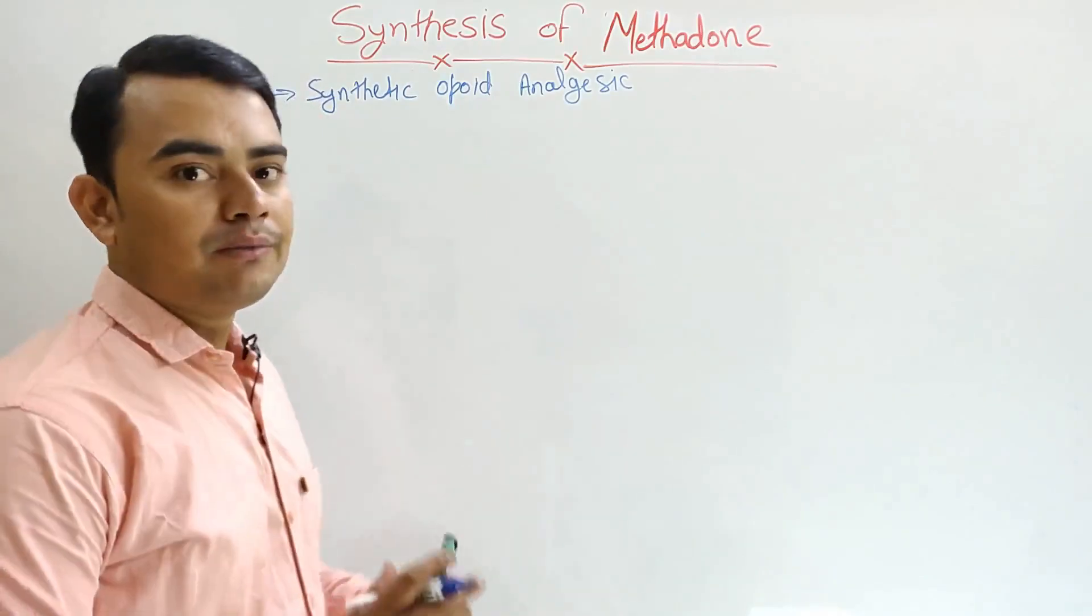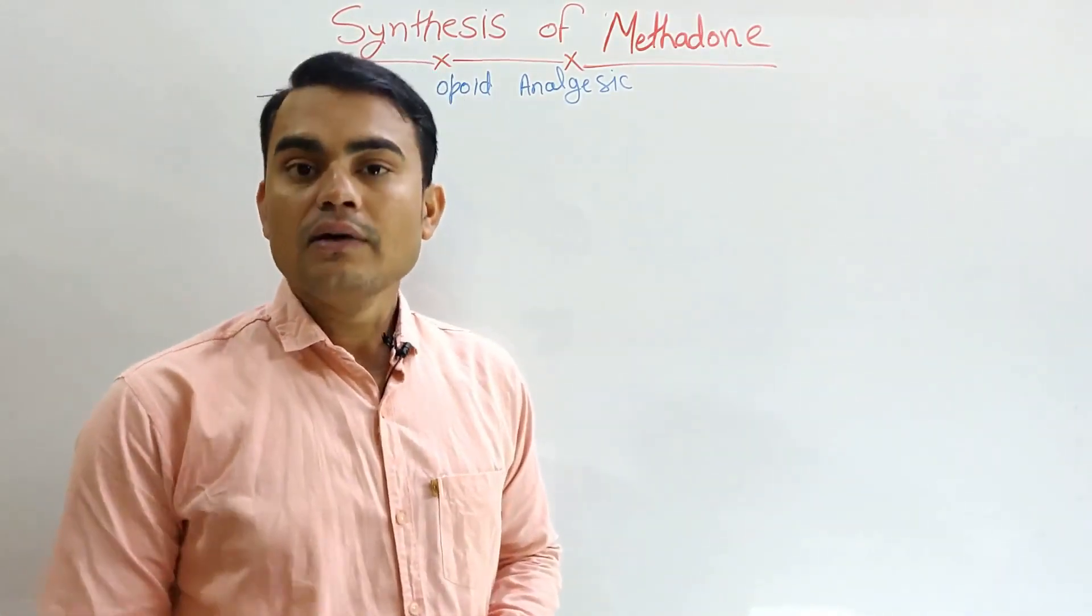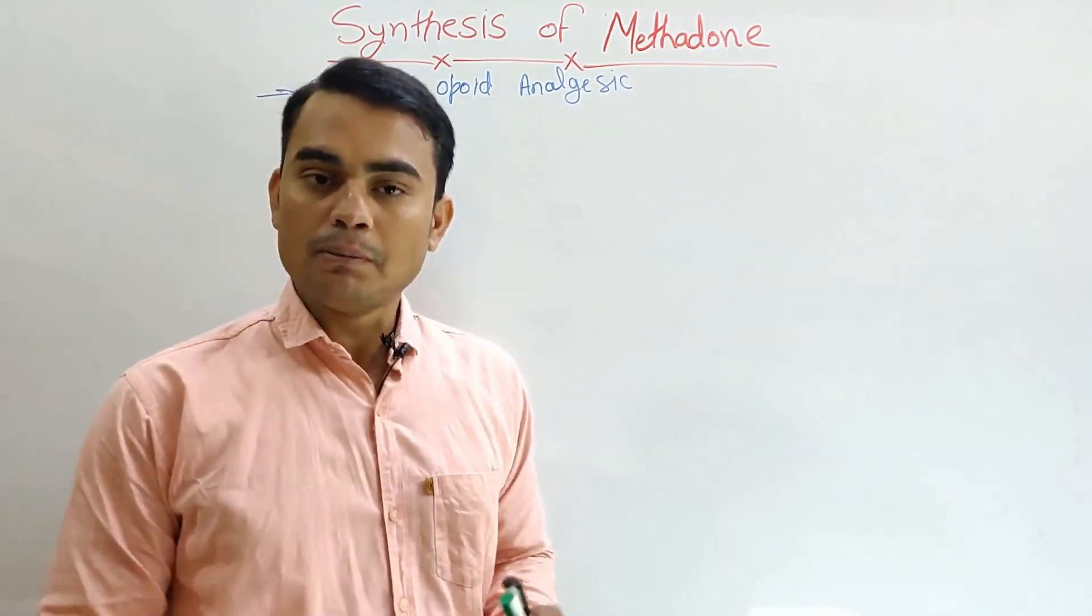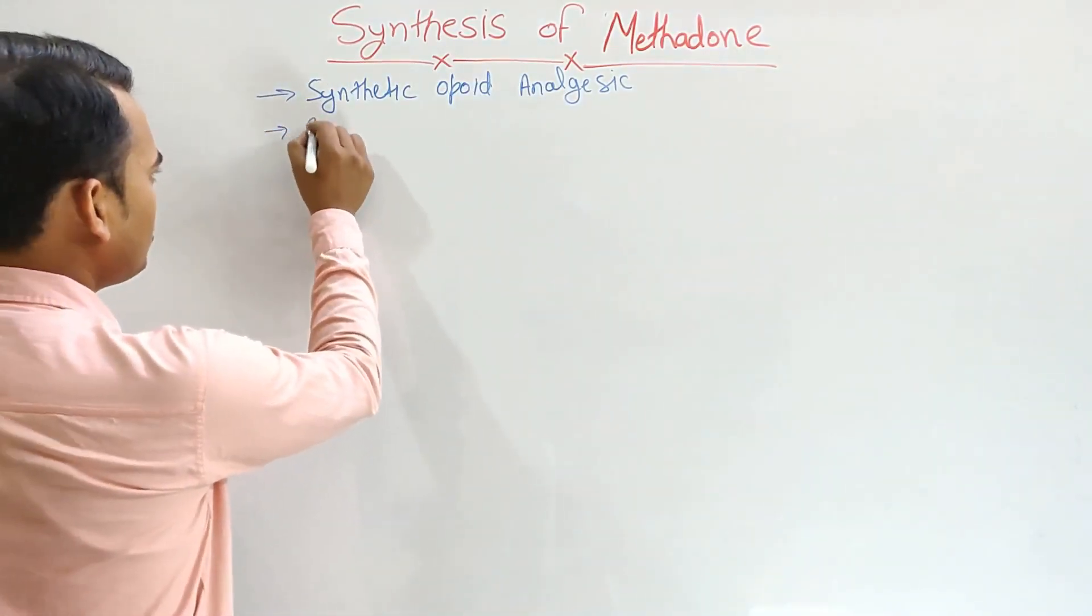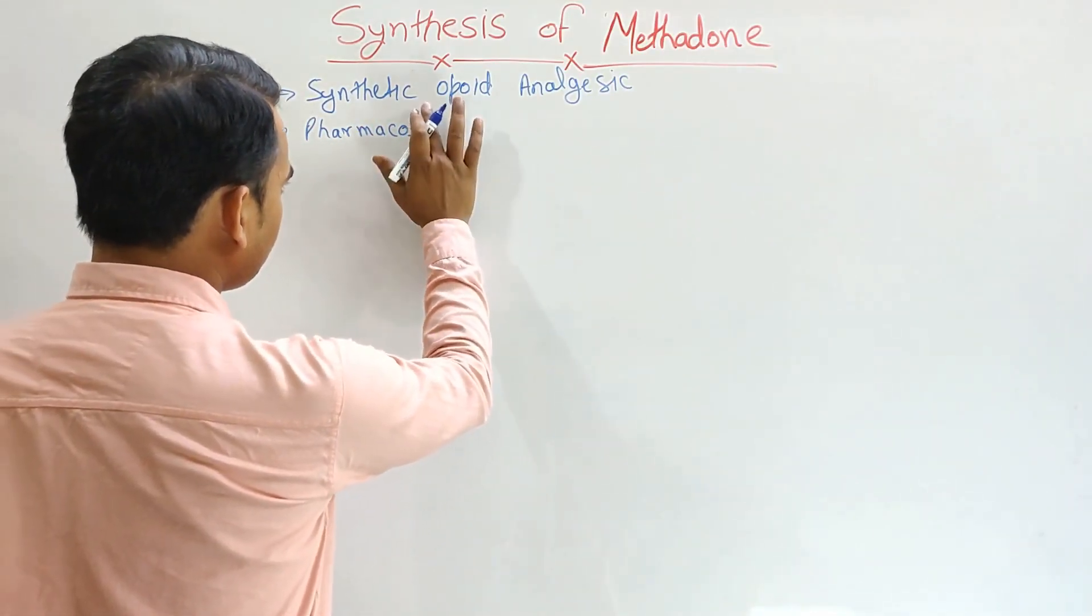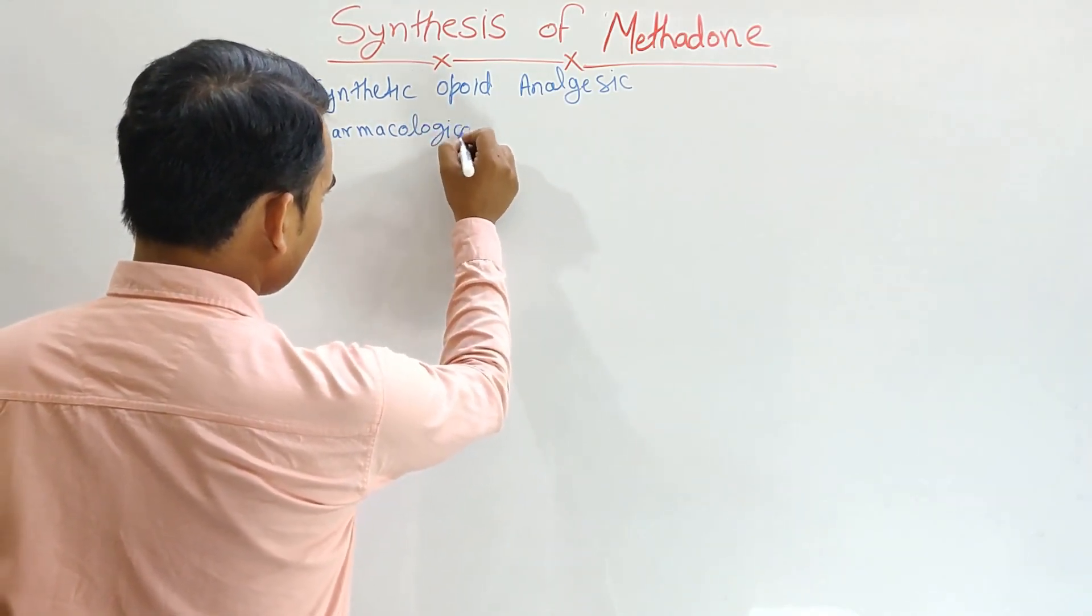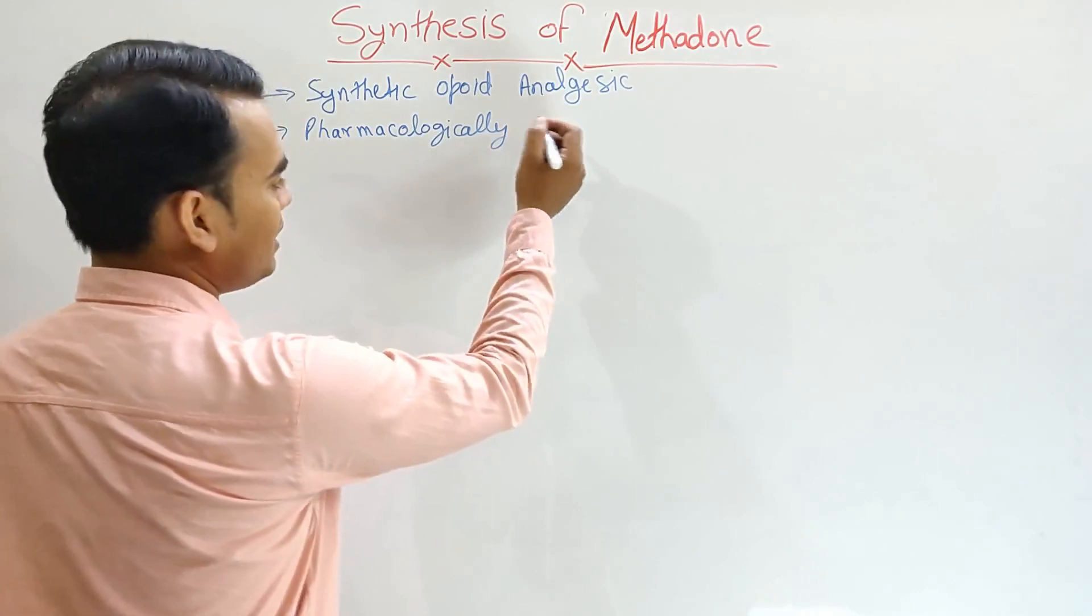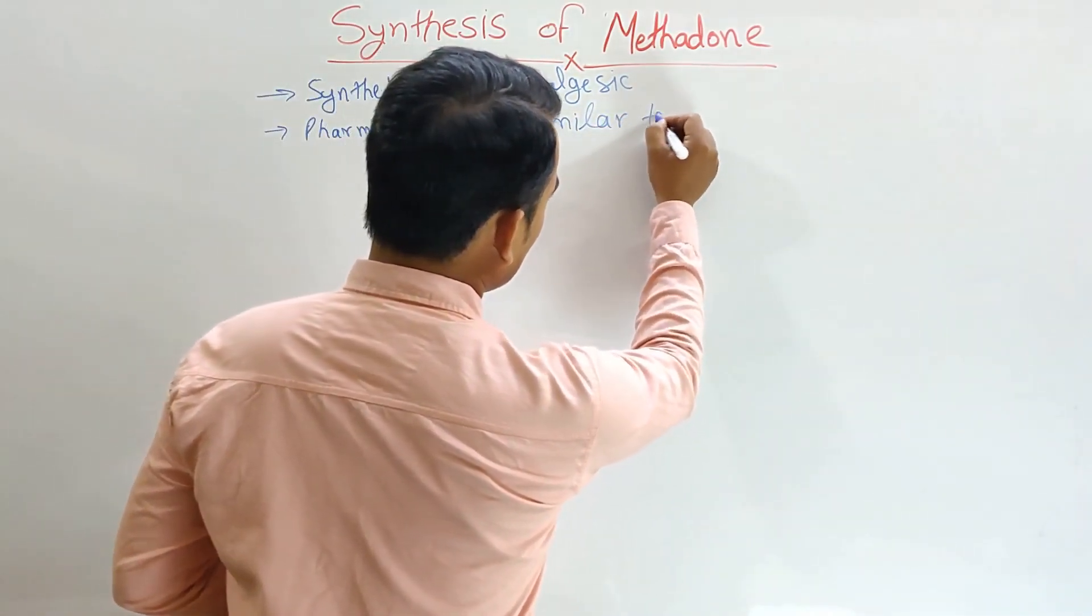The structure of methadone and morphine are totally different, but pharmacological activity of both compounds are similar. So methadone is pharmacologically similar to morphine.